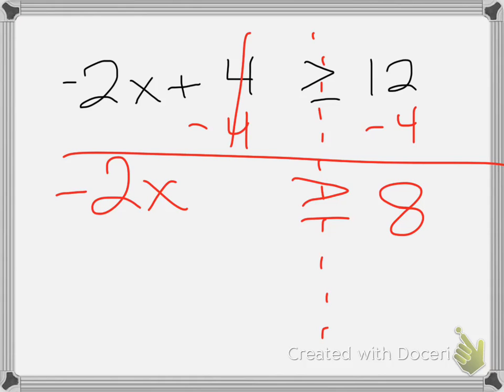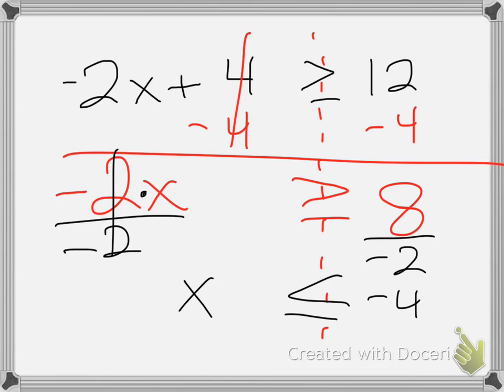If you divide by negative 2 here, you've got to divide by negative 2 here. And if you divide by negative, you switch the inequality sign. And there we go. There's our answer. So x can be anything less than or equal to negative 4.